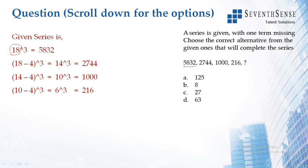Next is 14, next is 10, and next is 6. That means there's a difference of 4. So 18 minus 4 is 14, 14 minus 4 is 10, 10 minus 4 is 6. That means the next number should be minus 4—6 minus 4 is 2, and 2 cubed is 8.